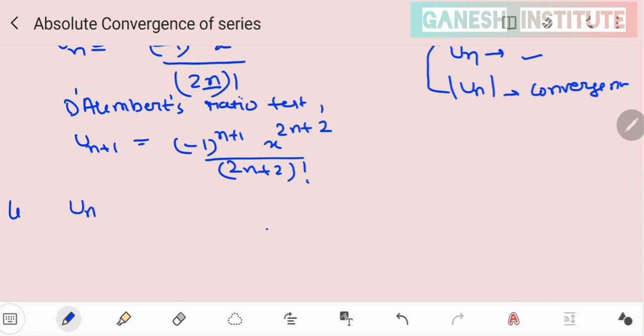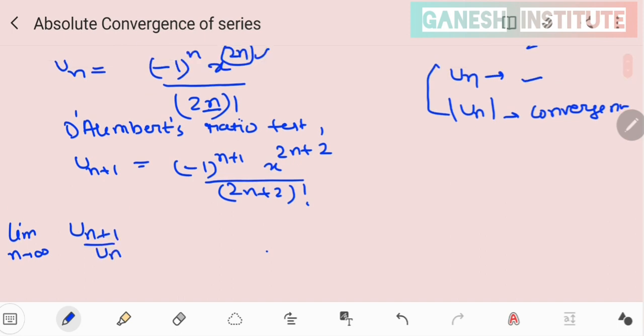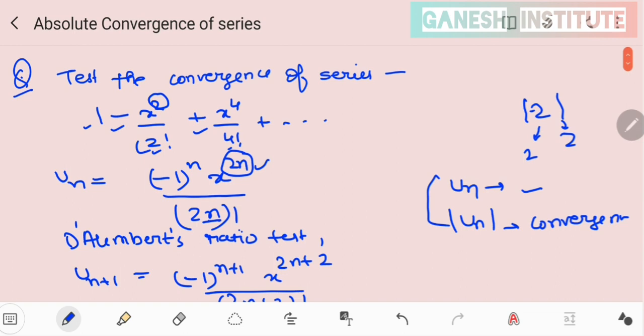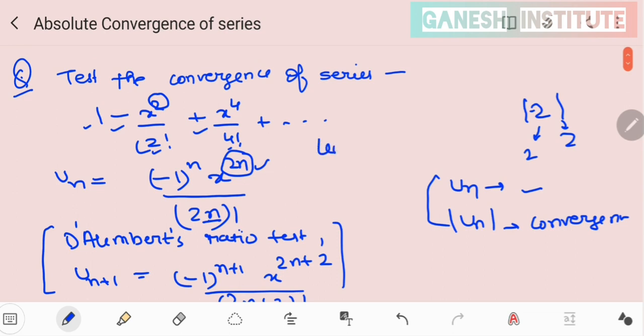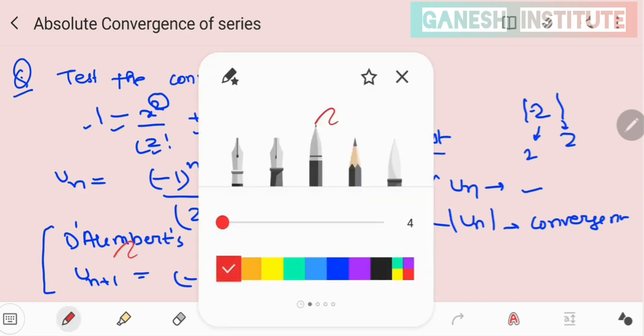Now, what you need to find out? Limit n tends to infinity, u_n+1 by u_n. Or you could do it with Leibniz test as well. It would be easier than that one. Because for Leibniz, we know we have two conditions to be satisfied. One is that every successive term should be less than the previous term. And the limit should be 0. Limit n tends to infinity, u_n should be 0.